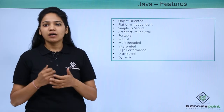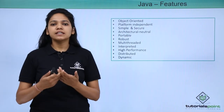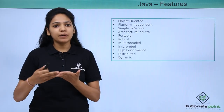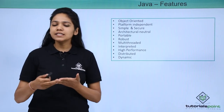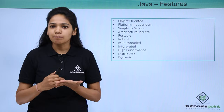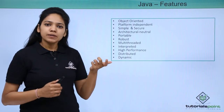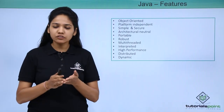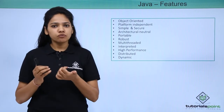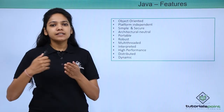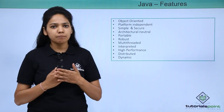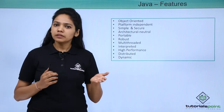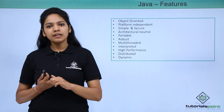The next feature is that Java is architectural neutral, meaning there is no implementation dependency. For example, in C++ the int type consists of 2 bytes for 32-bit architecture and 4 bytes for 64-bit architecture. Whereas in Java there is no such dependency — it occupies 4 bytes for both 32-bit and 64-bit architectures.